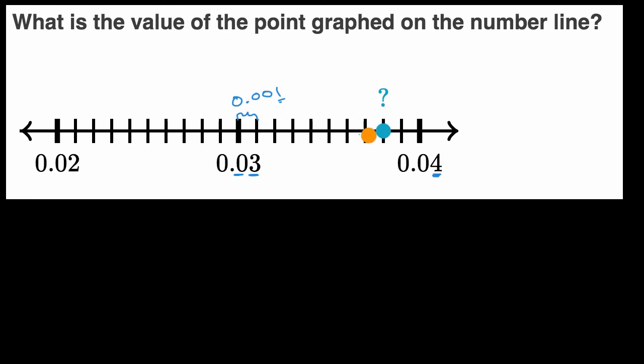So one way to think about it, this number is going to be 0.03. We have our three hundredths, but then let's see how many thousandths we have to add to it to get to this value right over here.